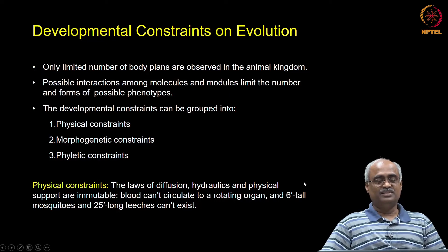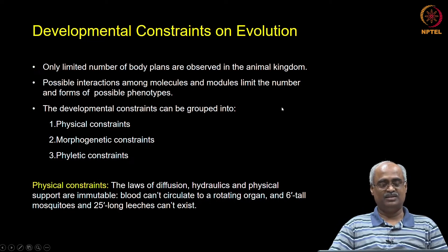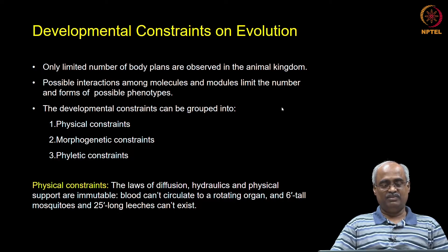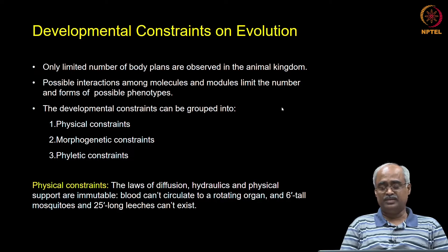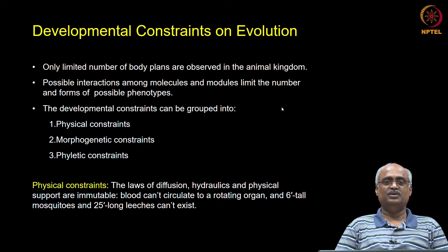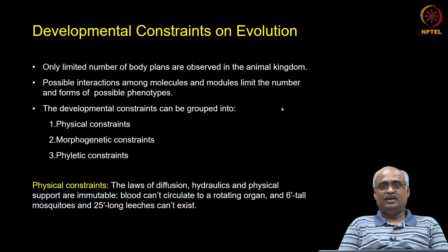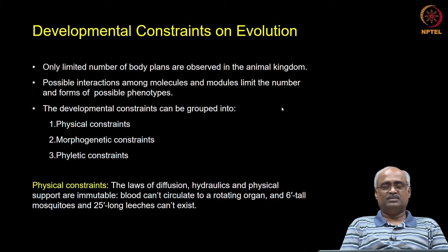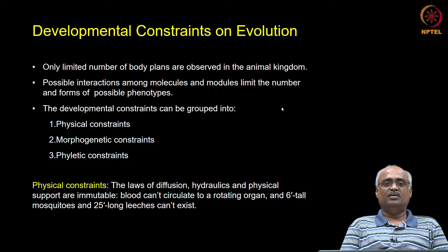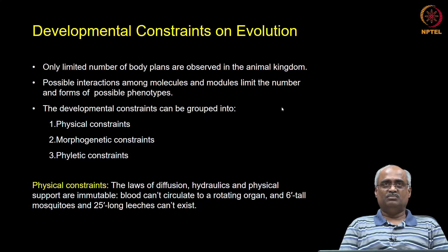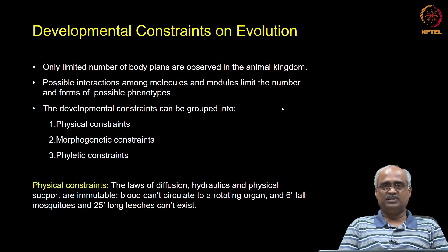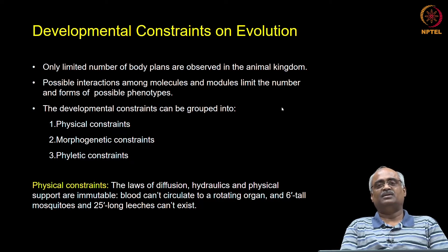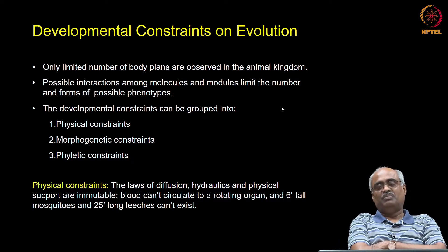Welcome back to developmental biology. This is our last class. Till the previous class we discussed mechanisms by which phenotypic variations can be generated, learning that by independently varying developmental modules and genetic modules — primarily enhancers — a variety of phenotypes can be generated from a common lineage. Through that, we got the impression that there is no limit to the varieties of phenotypes one can generate, but the reality is not that.